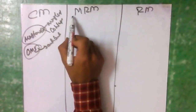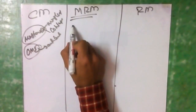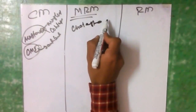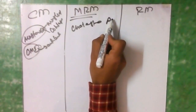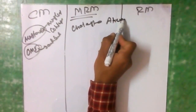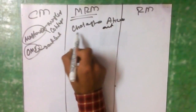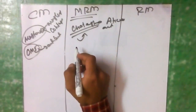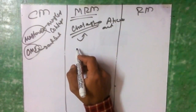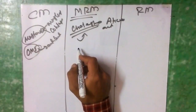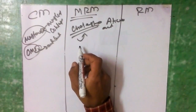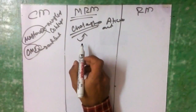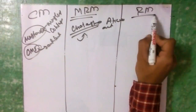Modified radical mastoidectomy (MRM) is performed when there is cholesteatoma formation in the atticoantral type of CSOM. It is also done for chronic otitis media with limited disease.